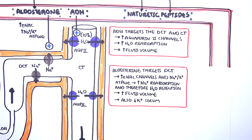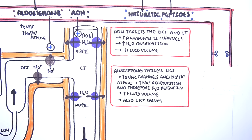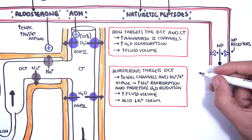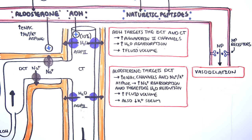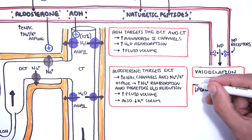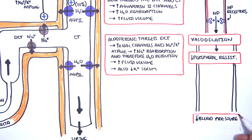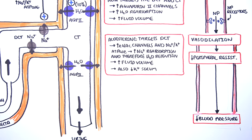Finally, the natriuretic peptides also have a role in blood vessels. It has the opposite effect to the antidiuretic hormone. The natriuretic peptide binds onto natriuretic peptide receptors on vessels, causing vasodilation, which will lead to a reduction in peripheral resistance, which means it will also decrease blood pressure.